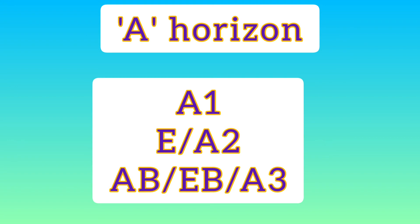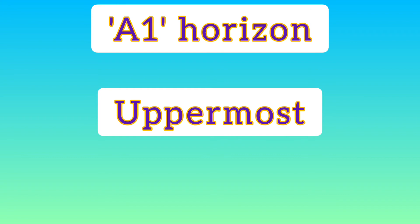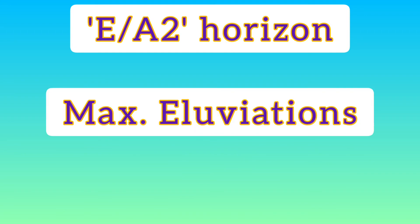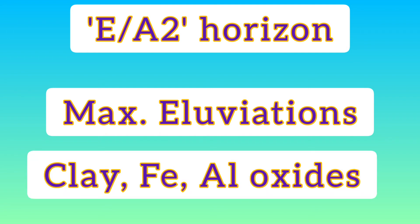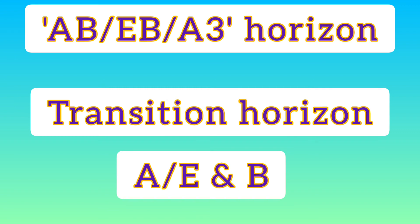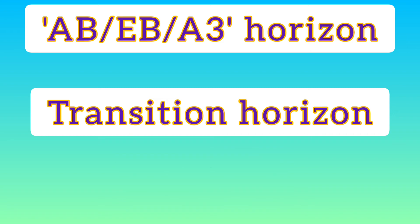The A horizon has three sub-horizons: A1, E (or A2), and AB (or EB). The A1 horizon is the uppermost mineral soil horizon, which is rich in organic matter. In the E or A2 horizon, maximum eluviation takes place — including clay, iron, and aluminium oxides — with a corresponding concentration of resistant minerals such as quartz in sand. The AB or EB horizon is the transition horizon between A/E and B, also known as A3, but sometimes this horizon is absent.